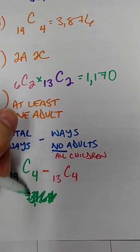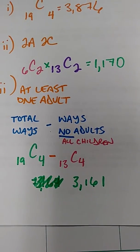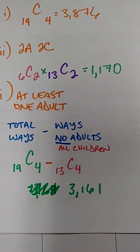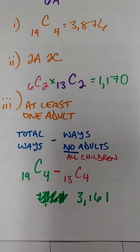Just kidding. I lied. 3,161. There we go. Total number of ways to have at least one adult. That's it for question 17. We'll pick up with question 18 in the next video.